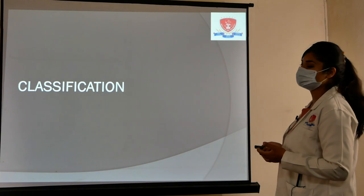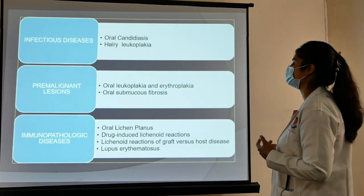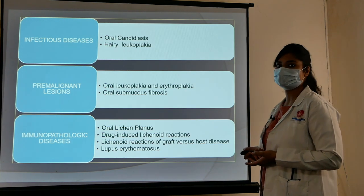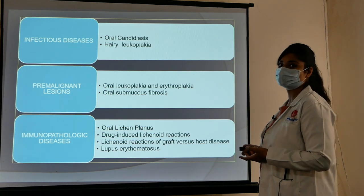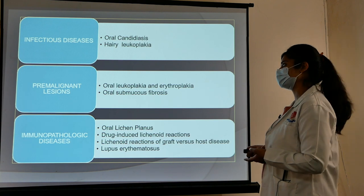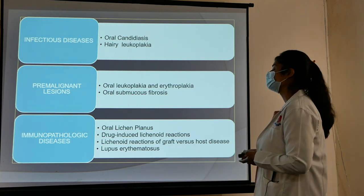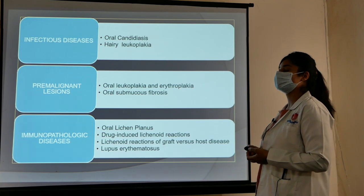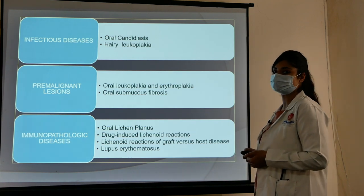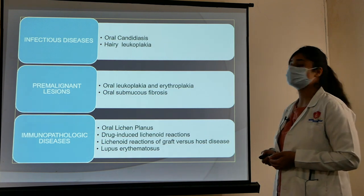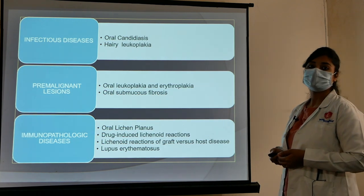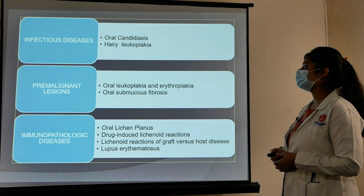Coming to the classification of the white lesions of the oral mucosa. First, they are classified into infectious diseases — lesions caused by infections like oral candidiasis caused by Candida albicans and hairy leukoplakia. Second are premalignant lesions, which have the potential to convert into malignancy, including oral leukoplakia, erythroplakia, and oral submucous fibrosis.